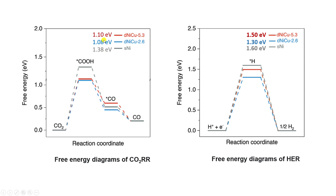These are the calculated energies for the potential determining step. For NiCu 5.3 it is 1.10 eV, for NiCu 2.6 it is 1.08 eV, and for the pure single nickel atom catalyst it is 1.38 eV. These are the limiting potentials for CO2RR — I checked this paper and these are the values from the potential energy diagram.